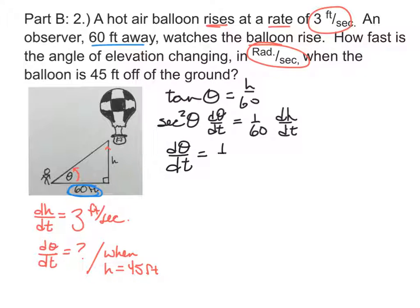That will equal 1 over 60 times dh/dt times 1 over secant squared. Well, the reciprocal of secant is cosine. So we'll find cosine squared of theta.